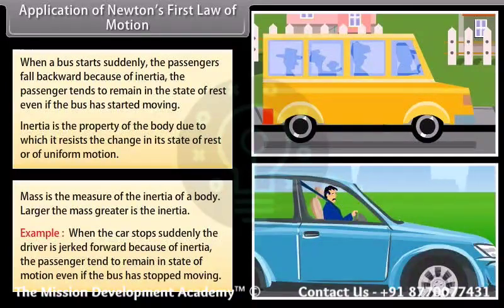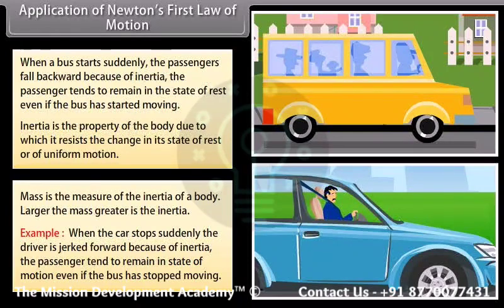Example: when the car stops suddenly, the driver is jerked forward because of inertia. The passenger tends to remain in the state of motion even if the bus has stopped moving.